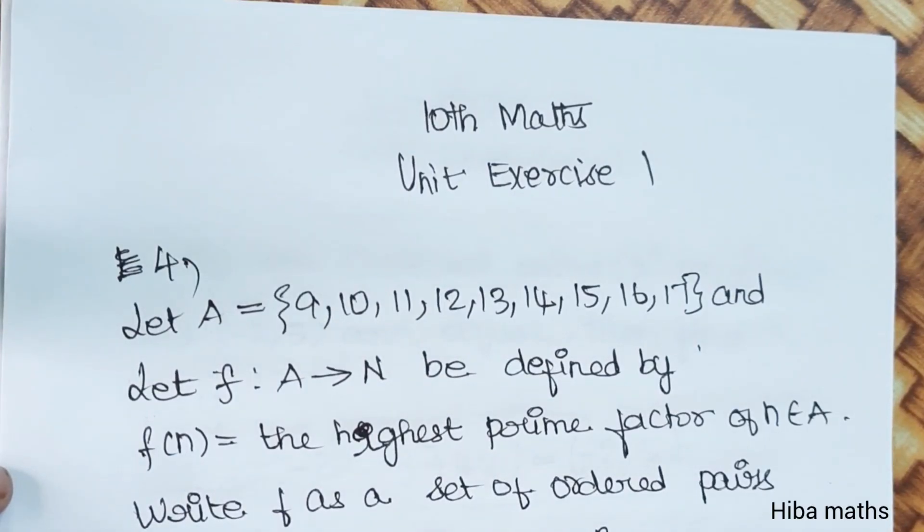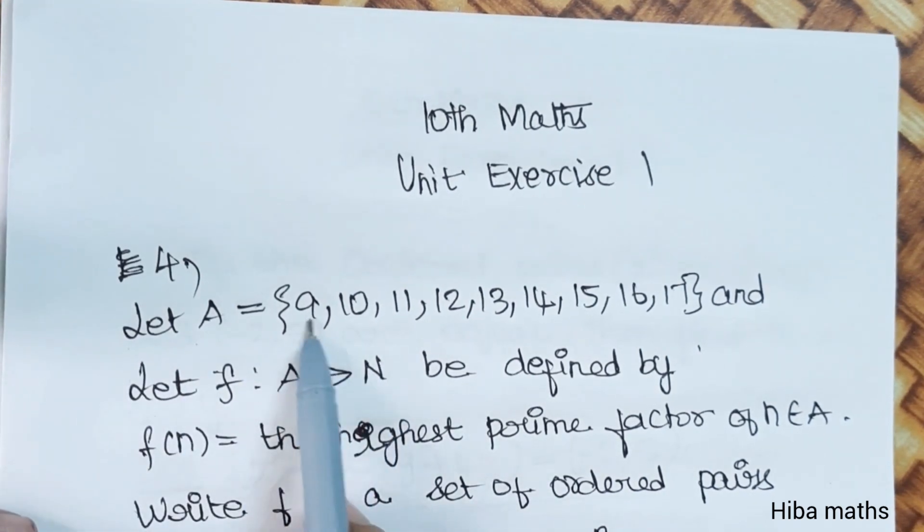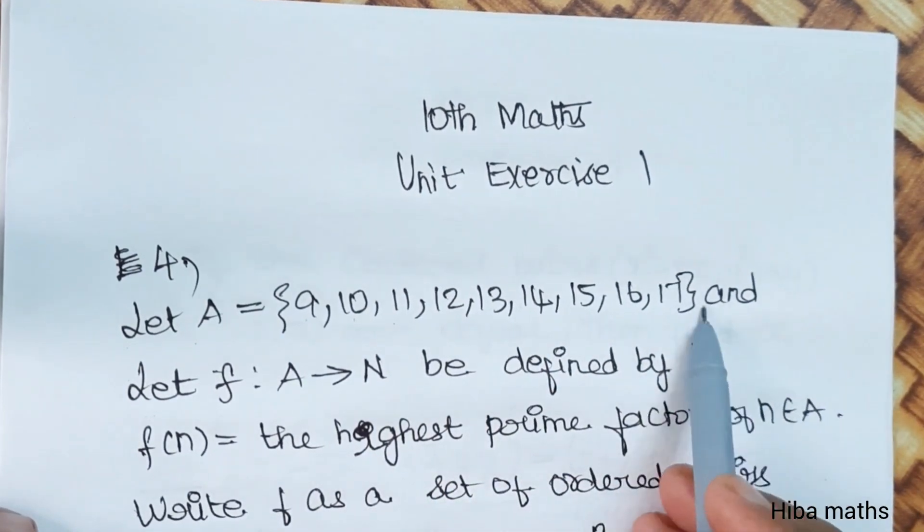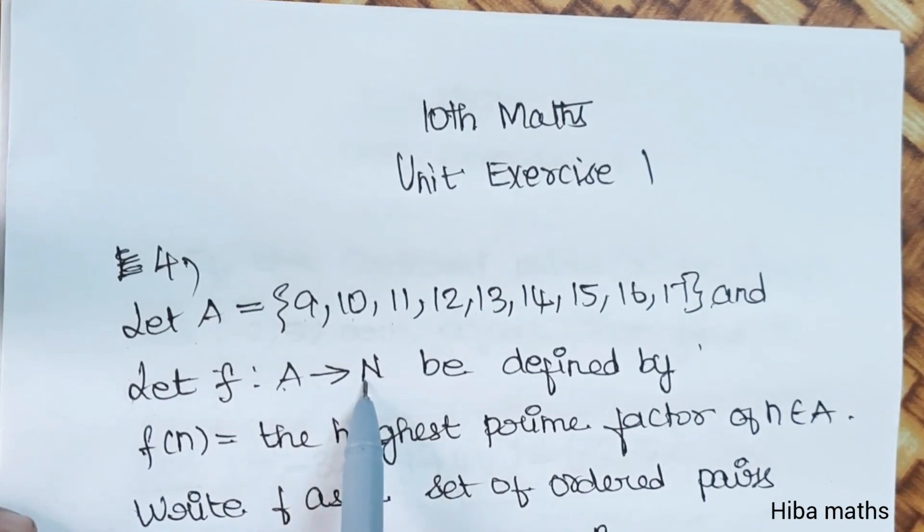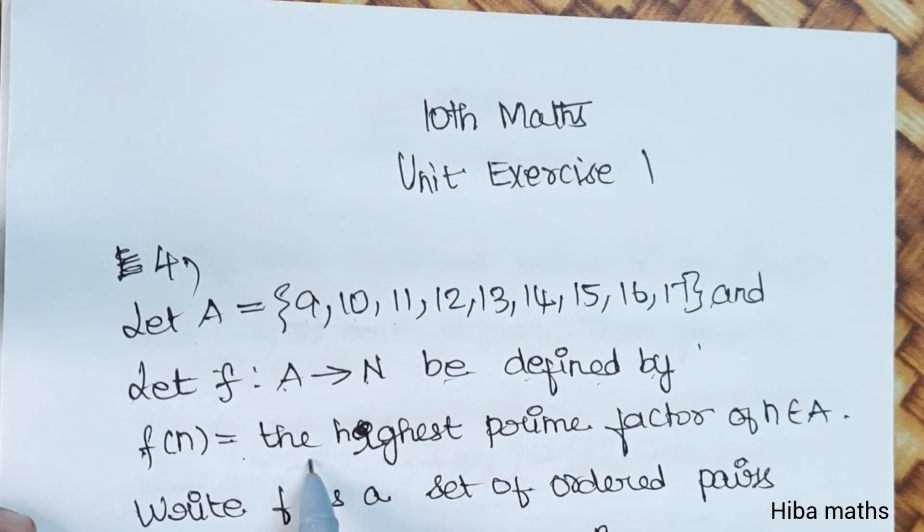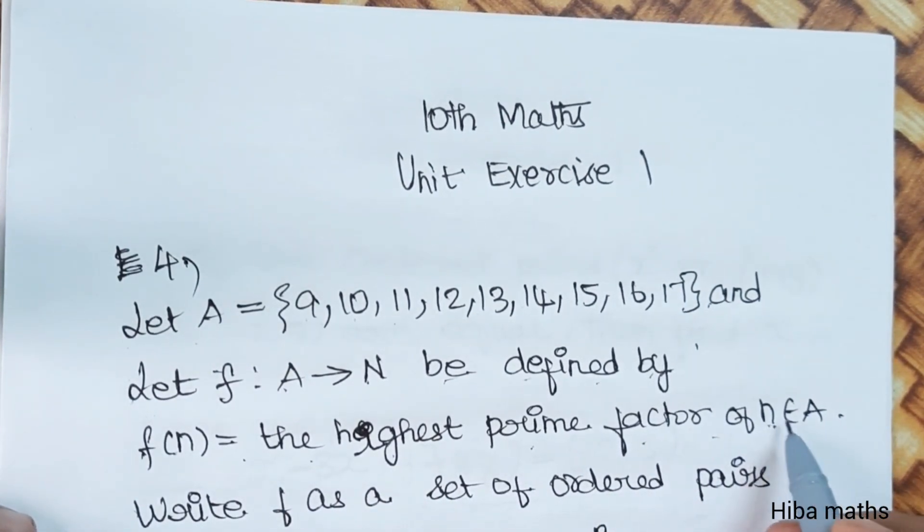Hello students, welcome to Heba Maths, 10th standard maths unit exercise 1, 4th question. Let A equal 9, 10, 11, 12, 13, 14, 15, 16, 17 and let function f: A to N be defined by f of n equals the highest prime factor of n, n belongs to A.